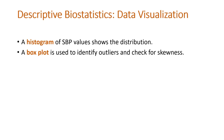For data visualization, a histogram of SBP values is used to show the distribution of the data, and a box plot is used to identify outliers and check for skewness.